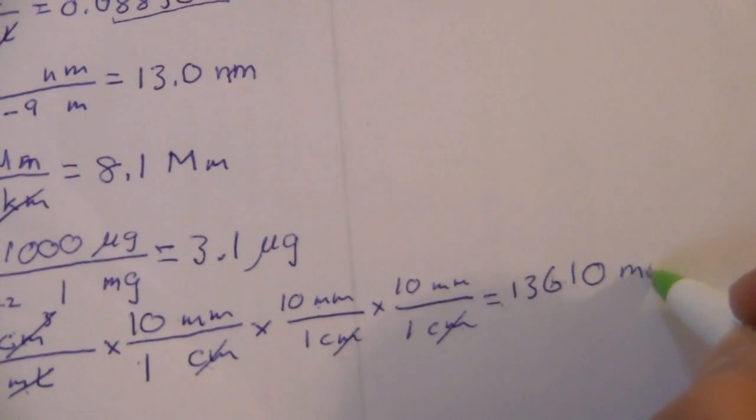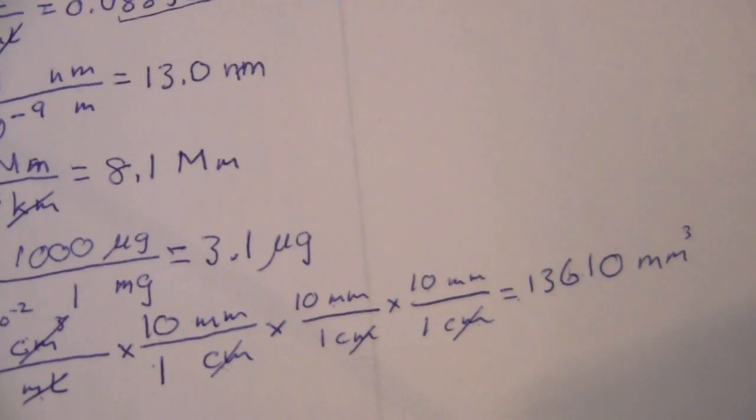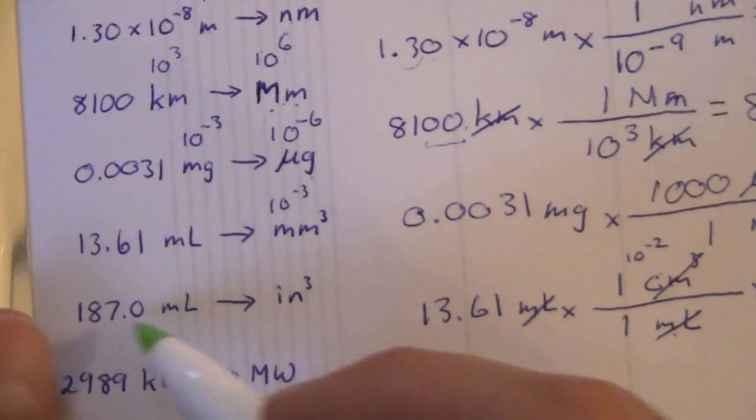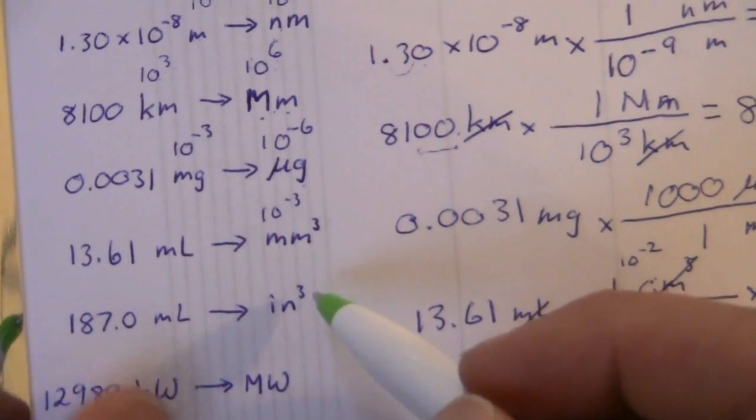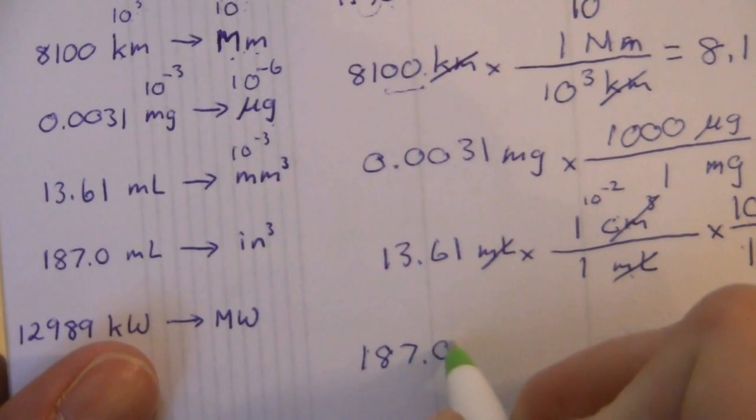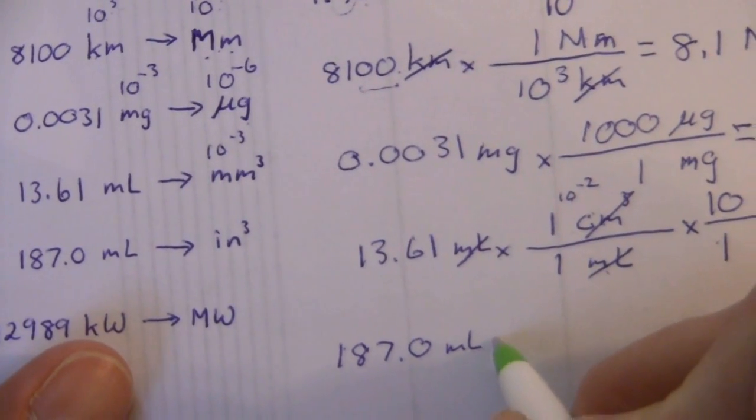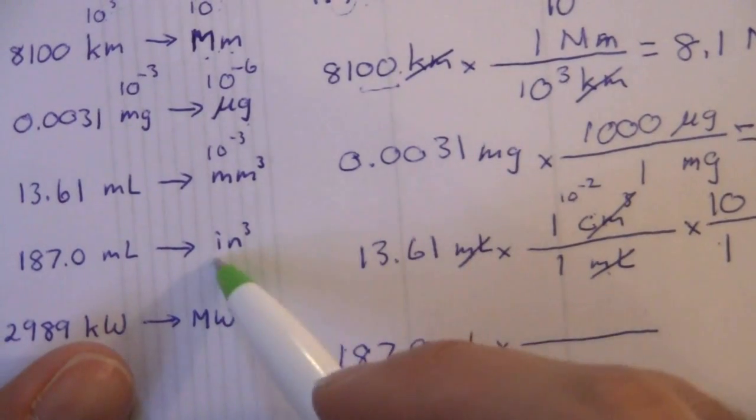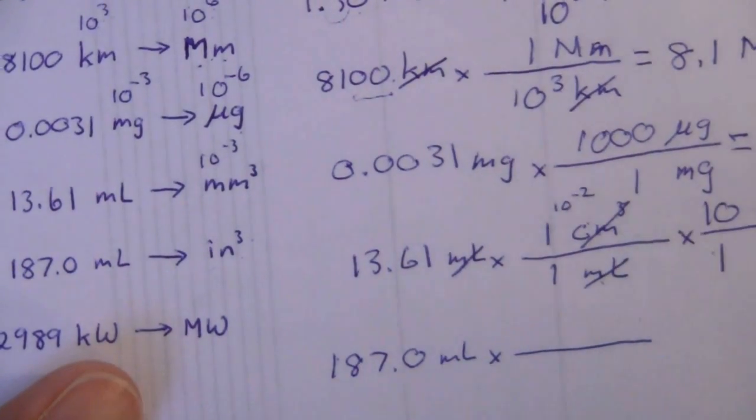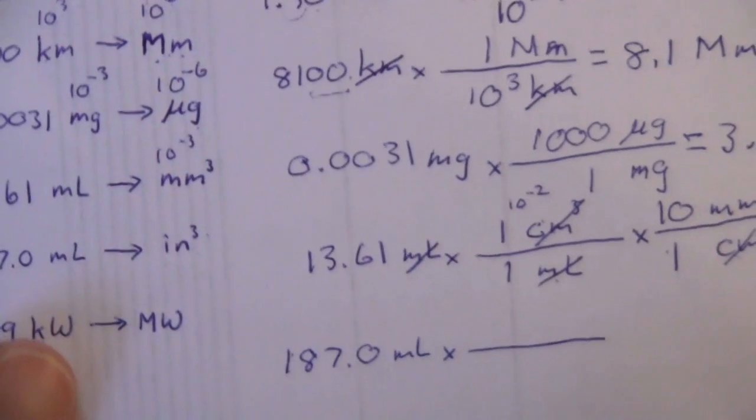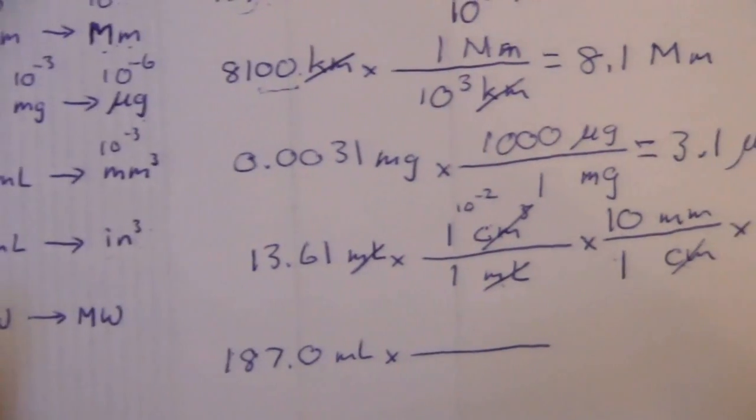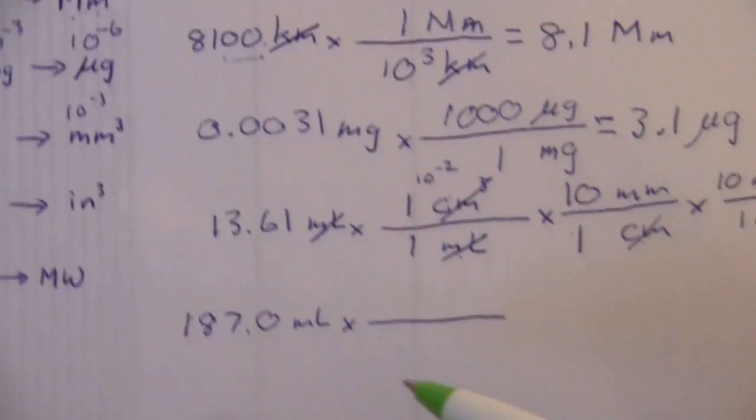Just a couple more here: 187.0 milliliters in cubic inches. This time we're doing a similar thing except converting to an English unit—187.0 milliliters and we want to convert to cubic inches. Now I don't know how many milliliters are in a cubic inch, so I can't convert that directly. Let's see how we might be able to convert that.